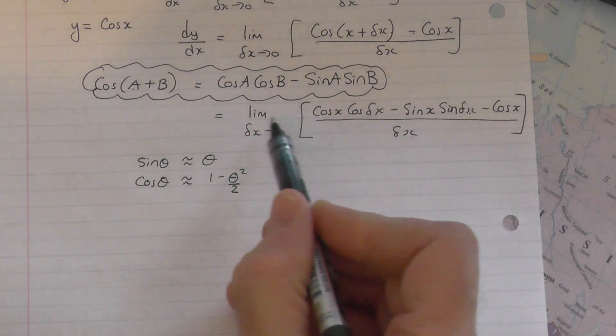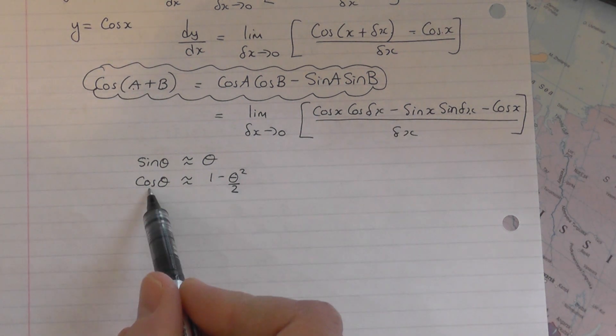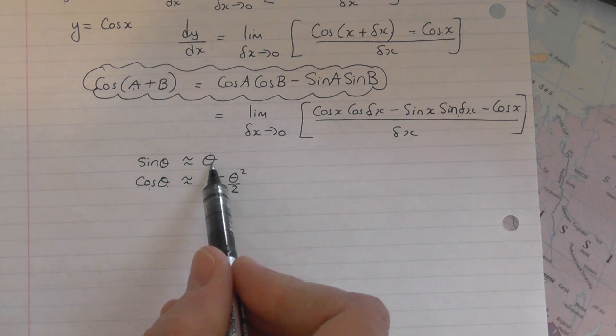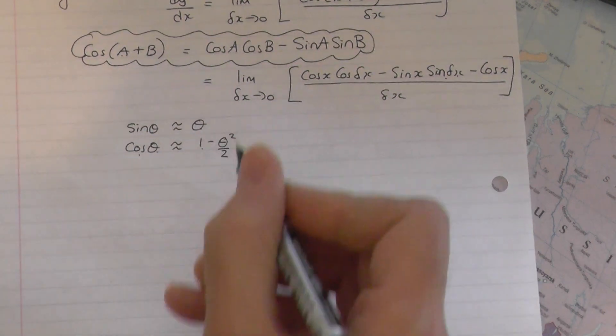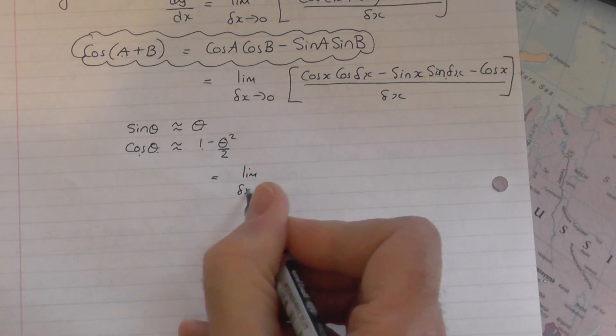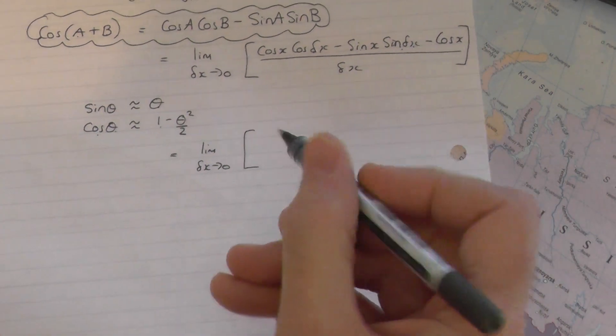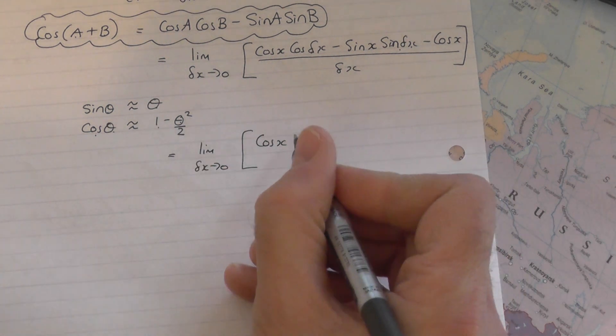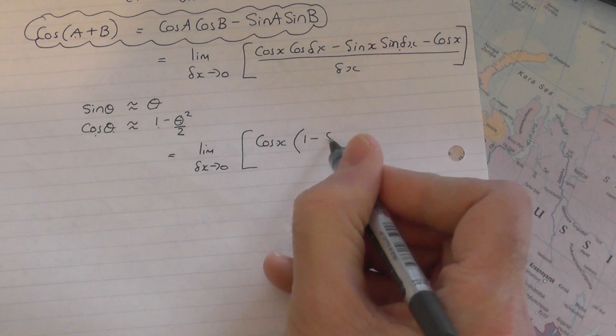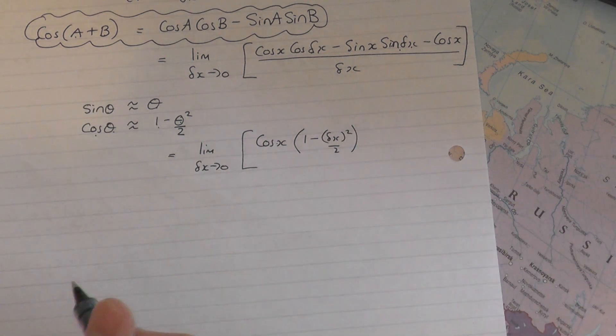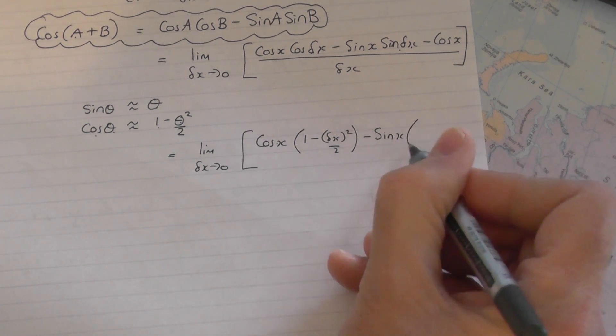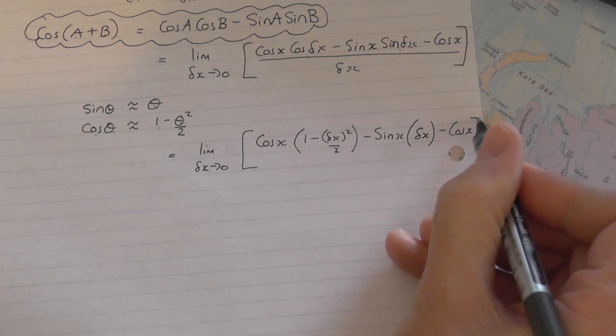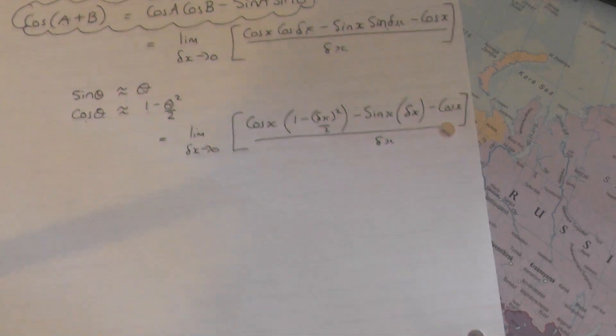So I go back now to this expression here and replace cos delta x, cos of theta with this, so that's going to get replaced with 1 minus delta x squared over 2, and the sine of delta x will be replaced with just delta x. So this is going to give us the next line, equals lim delta x tend to 0 of, so we've got cos of x times the cos of delta x, so using this here, it's cos x times 1 minus delta x in a bracket squared over 2. Then you've got sine of x multiplied by delta x, and then minus cos of x on the end, all divided by delta x.